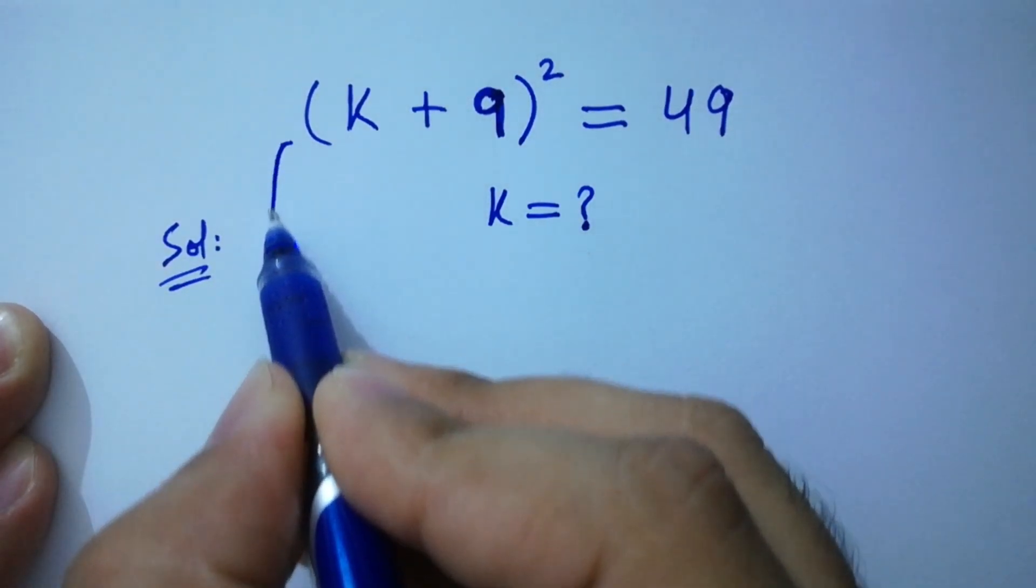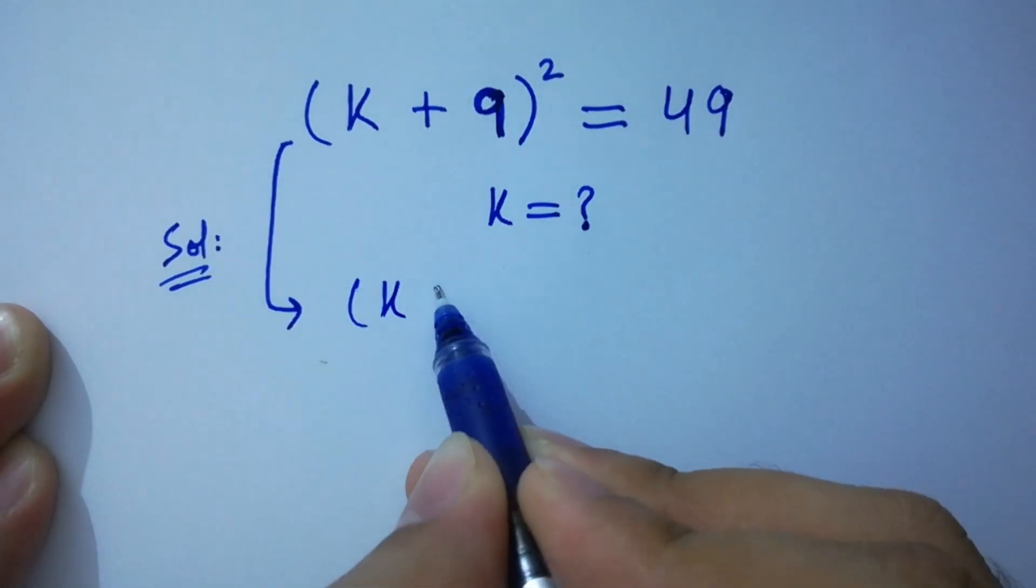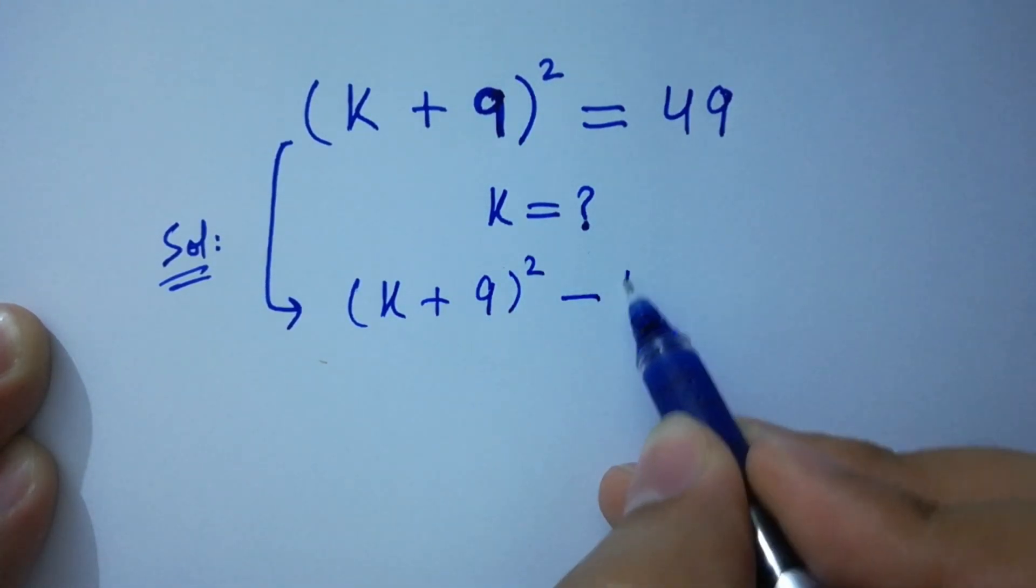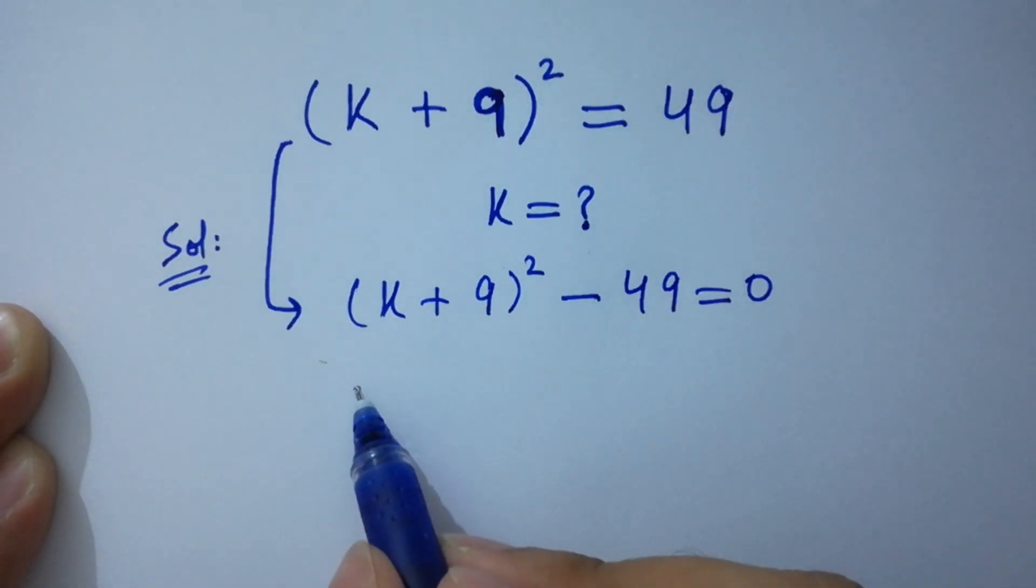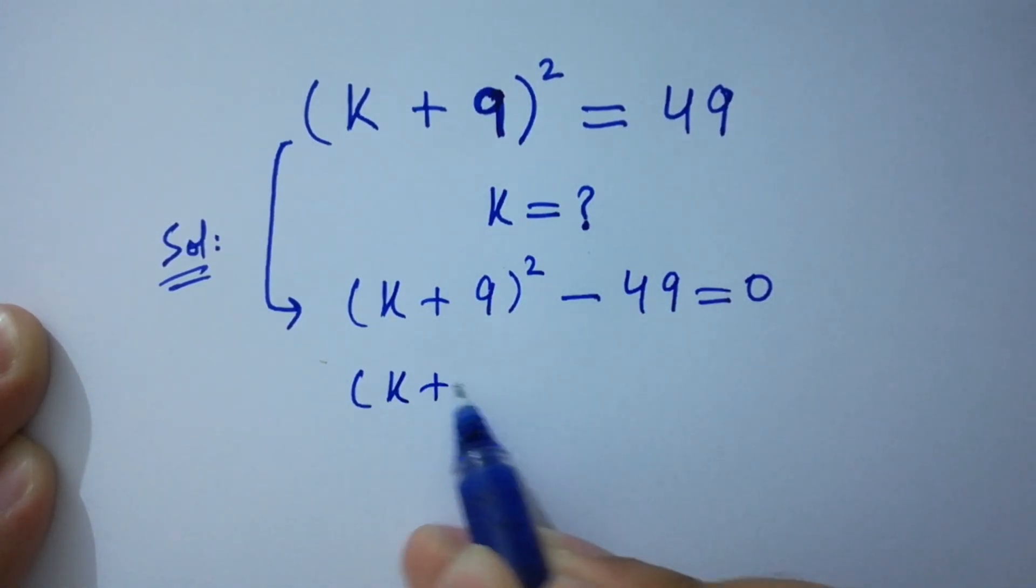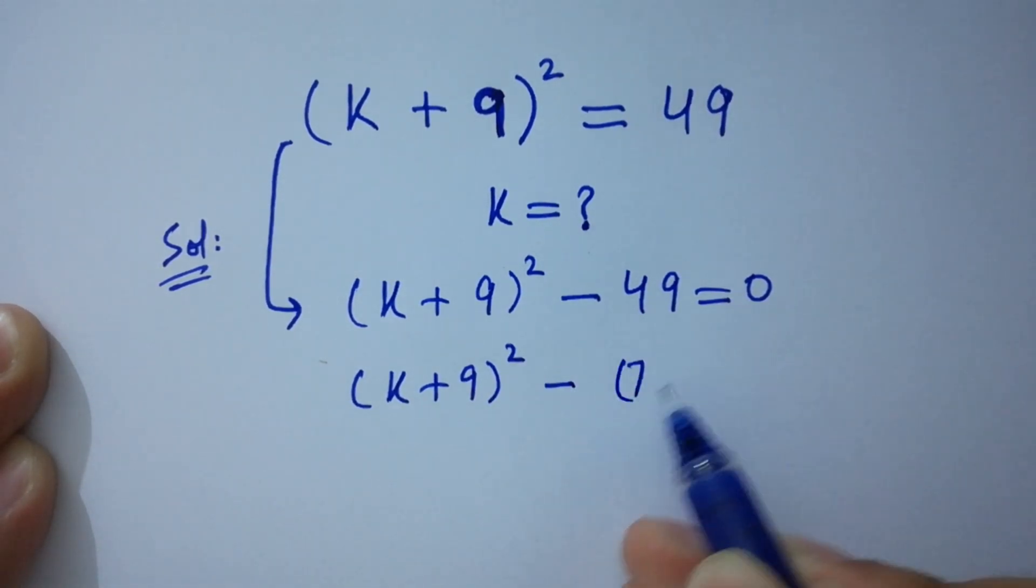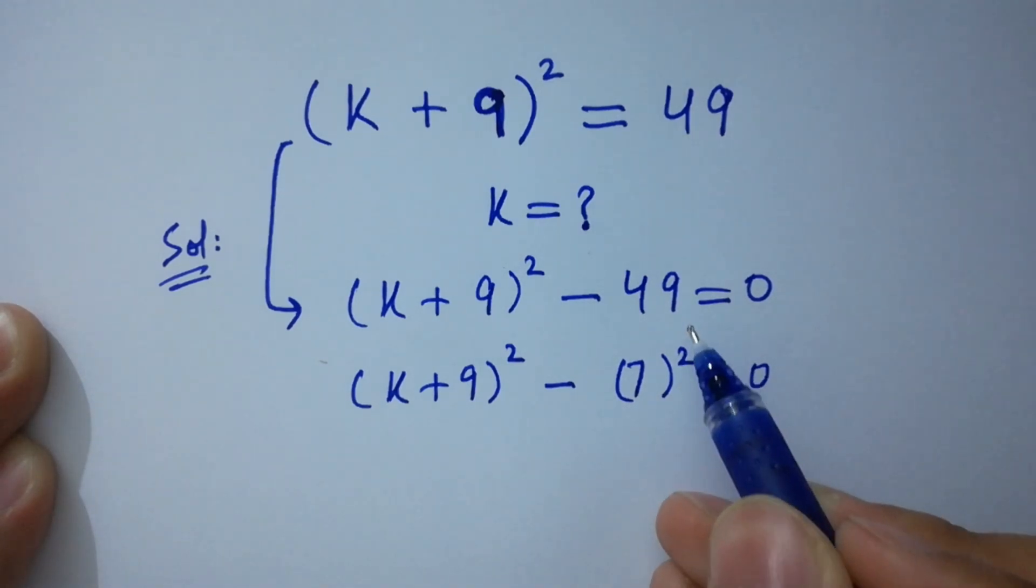It can be written as (k + 9)² - 49 = 0, which is the same as (k + 9)² - 7² = 0, since 7 times 7 is 49.